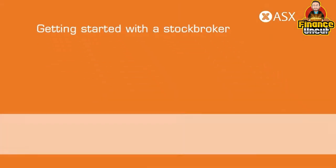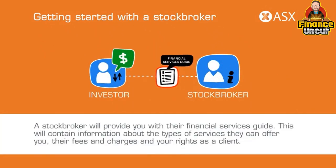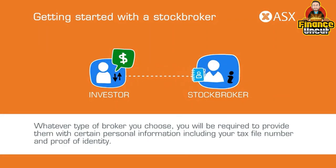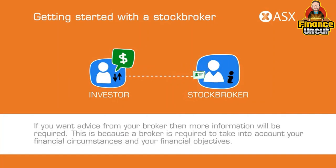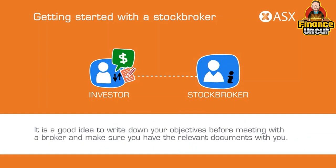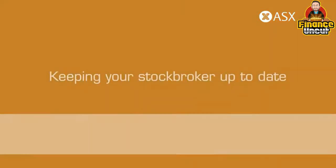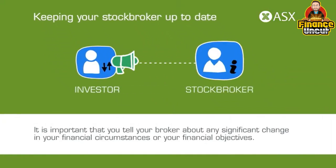Getting started with a stockbroker: a stockbroker will provide you with their financial services guide, which contains information such as the types of services they can offer, their fees and charges, and your rights as a client. Whatever type of broker you choose, you will be required to provide certain personal information, including your tax file number and proof of identity. If you are seeking advice, more information will be required, because a broker is obligated to take into account your financial circumstances and objectives. Write down your objectives before meeting with a broker and make sure you have the relevant documents. You may also be required to set up a cash management account to provide money in advance of trading. Tell your broker about any significant change in your financial circumstances or objectives.